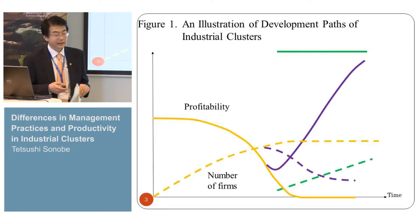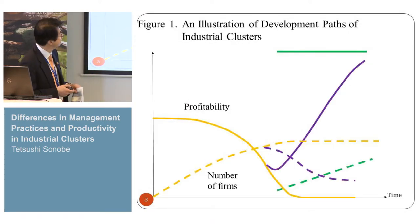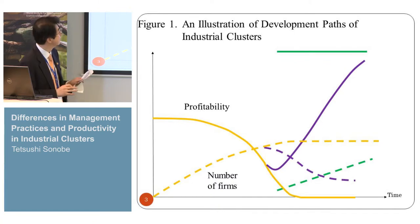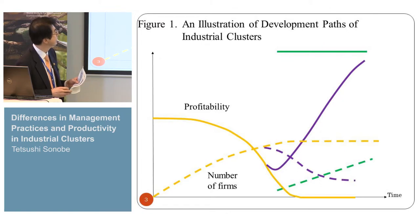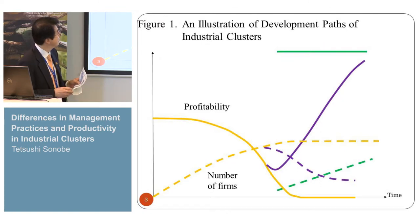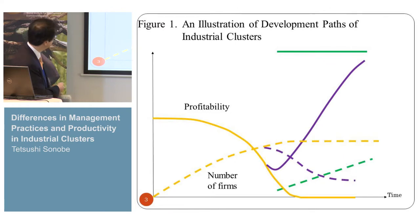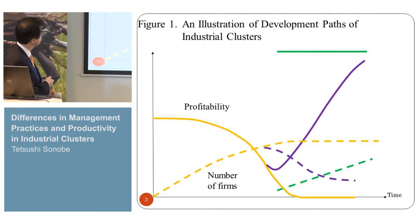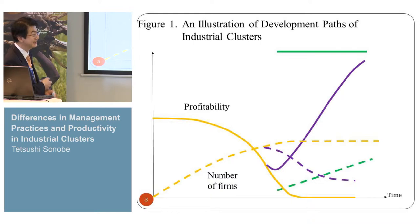The development path is different in different industries and different countries, but they could be put into three groups. The first is a typical type in many developing countries: somehow, some entrepreneur started the production of imitation of imported products.